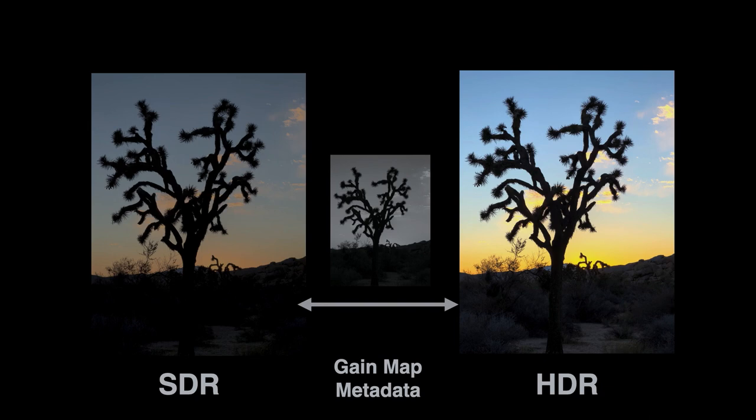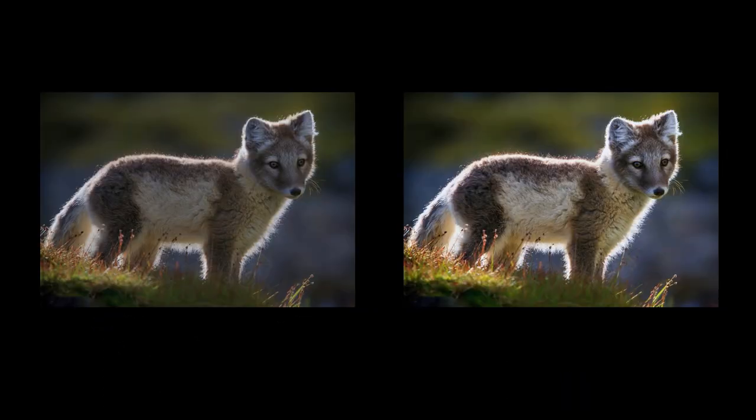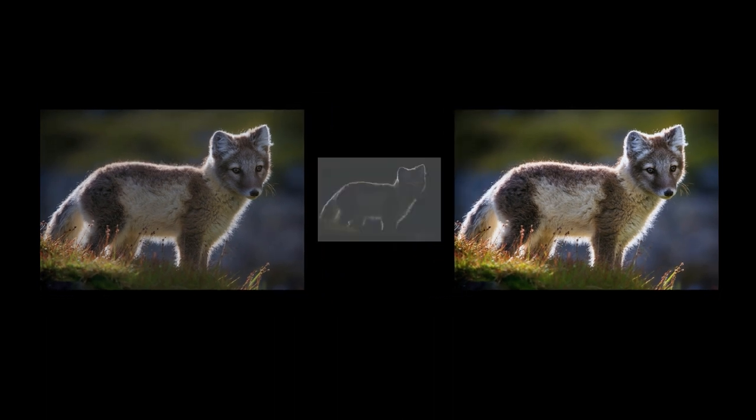Then in joint discussion with Adobe on DNG and ProRAW, folks at Adobe started playing with these gain maps too. This led to an alternative and improved way of calculating these gain maps. Going back to Eric's fox example dual-rendered in SDR and HDR, instead of using the underexposed bracket as the gain map,